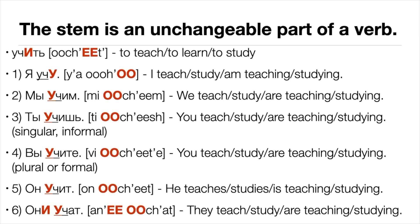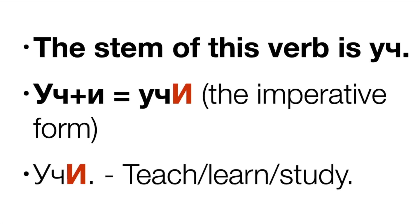The conjugation of учить: (1) Я учу, (2) Мы учим, (3) Ты учишь, (4) Вы учите, (5) Он учит, (6) Они учат. As you see, the stem of this verb is УЧ, because it doesn't change across all six forms. The imperative form of it is учи — meaning teach, learn, or study.